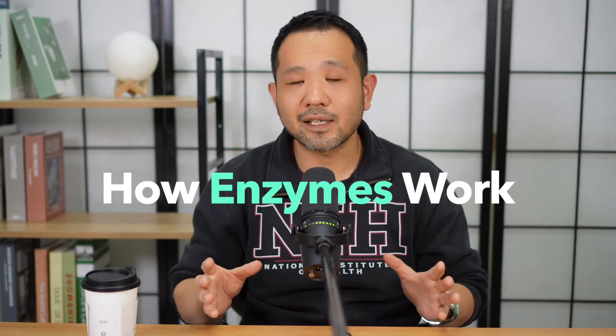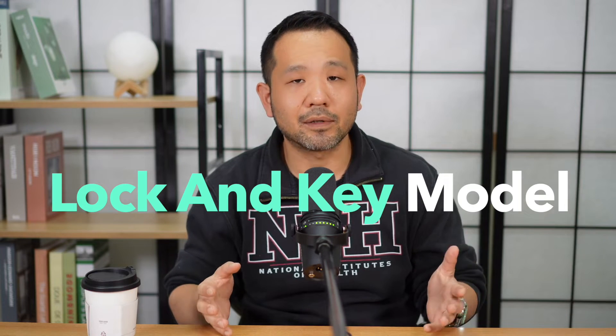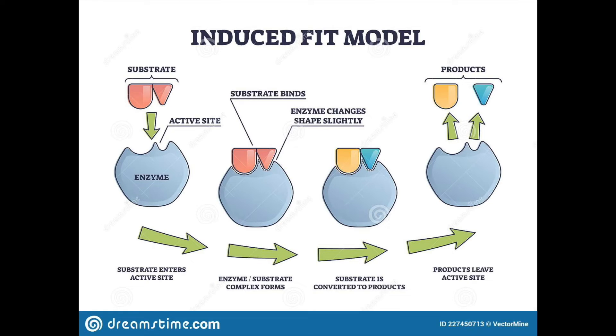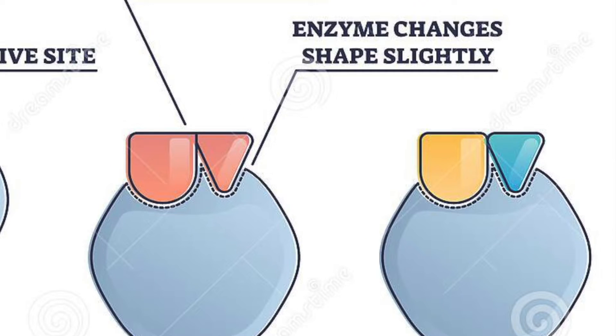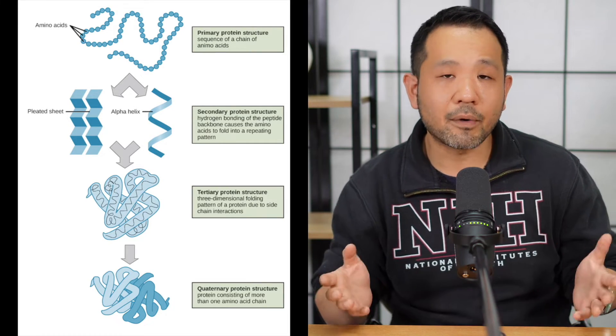That leads us into the induced fit model. In ninth grade you may have learned about the lock and key model, which makes sense — the substrate is structured like the active site of an enzyme so they bond properly. However, for AP Biology we need to understand that there is added sophistication: the induced fit model states that when the substrates bind to the enzyme, it's not just the enzyme affecting the substrate — the substrate itself also affects the structure of the enzyme.